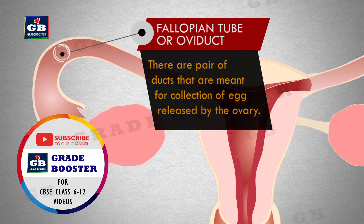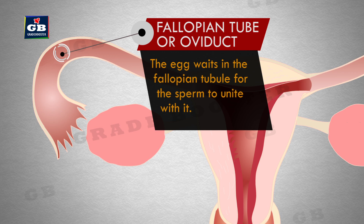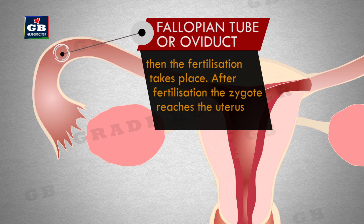Fallopian tube or oviduct: there are a pair of ducts meant for collection of the egg released by the ovary. The egg waits in the fallopian tube for the sperm to unite with it. If a sperm reaches the fallopian tube when the egg is residing in it, then fertilization takes place.